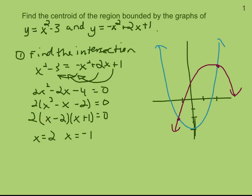We need the area of the region, which is going to be the integral from negative 1 to 2. The upper curve minus the lower curve: negative x squared plus 2x plus 1 minus the x squared minus 3.